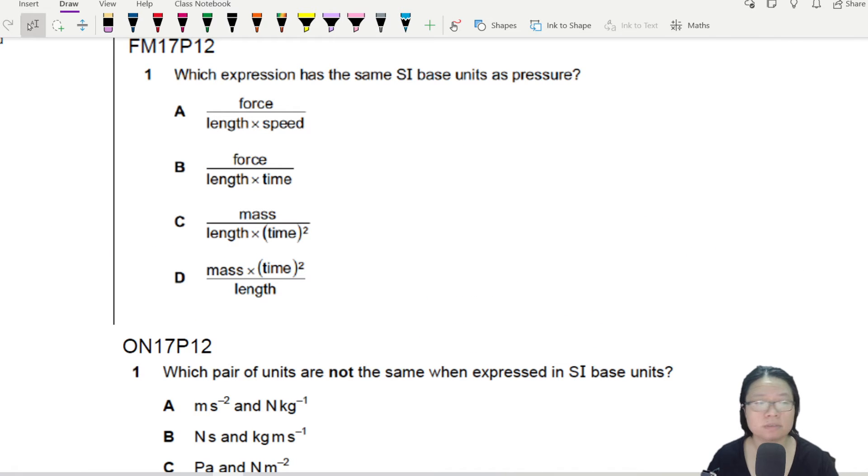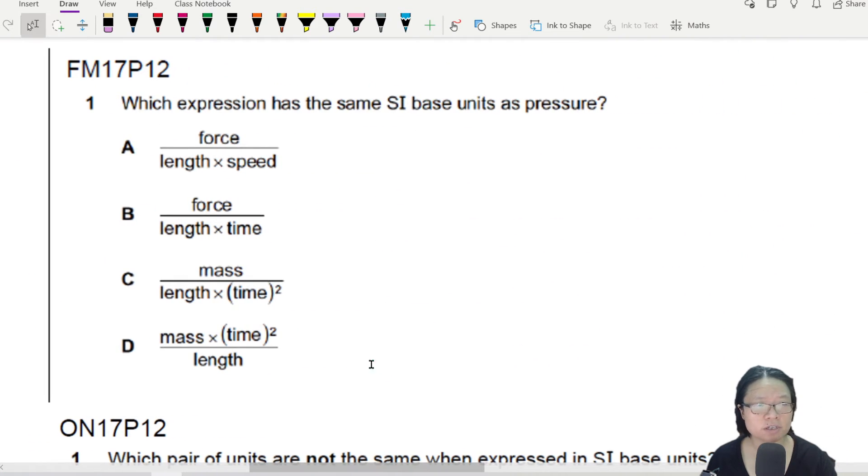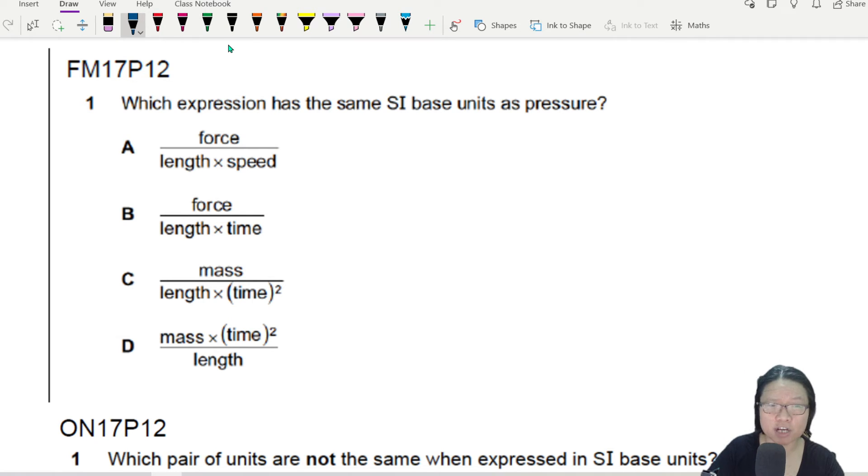So now we can look at a past year question. Here is an example. This is from FM March 17, paper 1-2. So it says here which expression has the same SI base unit as pressure. So whether you have done IG or other syllabus, you probably have already been introduced that pressure symbol P is equal to F over A.